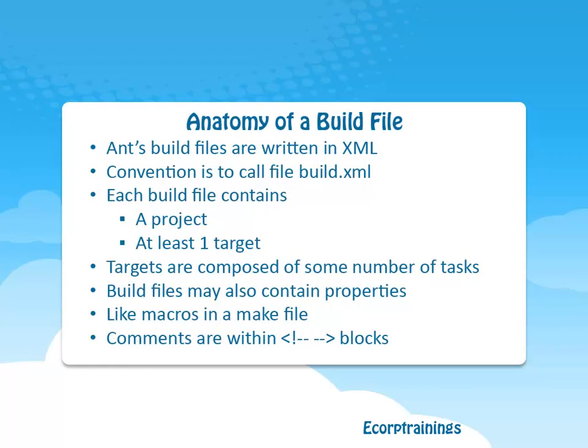Anatomy of a build file in Apache Ant: Apache Ant's build files are written in XML. The convention is to call the file build.xml. Each build file contains a project and at least one target. Targets are composed of some number of tasks. Build files may also contain properties, like macros in a make file. Comments are written within blocks.